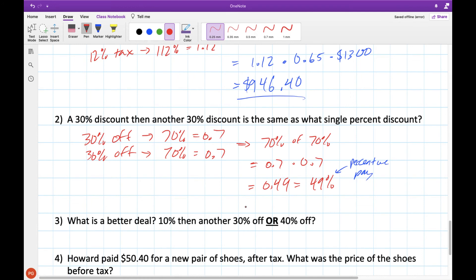So what does that mean as a discount? We started at 100%. We went down to 49%. What's this difference? 51%. So what we got overall was a 51% discount. By taking 30%, then another 30% off of that, that's the same as if we just started from the start and took off 51% on its own.